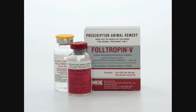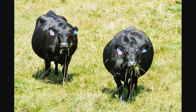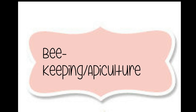Multiple Ovulation Embryo Transfer, also known as MOET, works as follows: first, a cow is injected with FSH hormone, which induces and fastens follicular maturation or ovulation. After ovulation, the blastocysts at the 8 to 32 cell stage are removed from the body of the female and transferred to surrogate mothers. The genetic mother is then again available for ovulation. This process helps in producing many hybrids or calves and is useful in cattle, sheep, rabbits, and buffaloes.